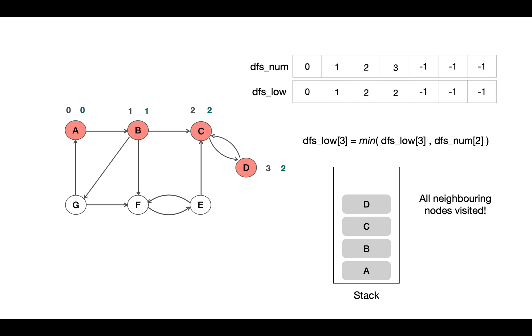So we update 2 as DFS_low value for the node 3.